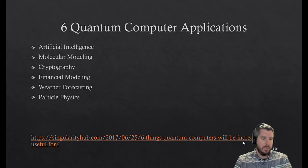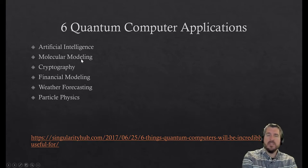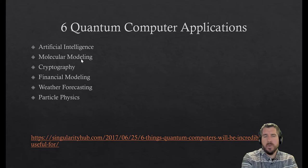And so there's all sorts of different quantum computer applications. One would be artificial intelligence, one might be molecular modeling—and these are all things that regular computers can do too, but we think that if we get better quantum computers, they'll do them better.